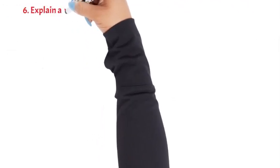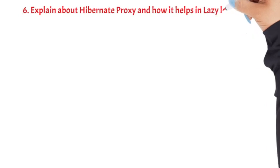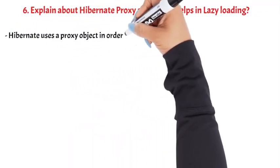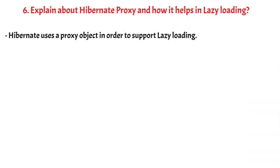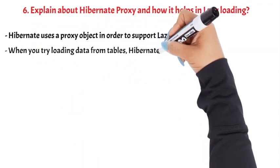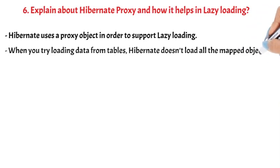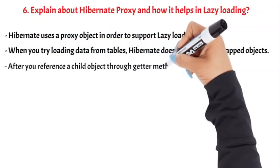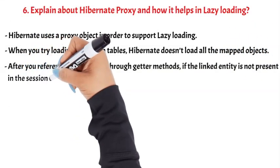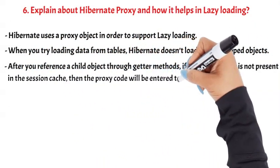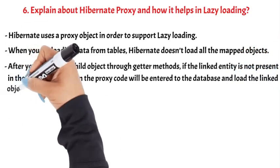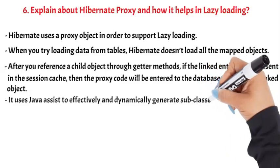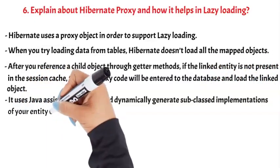Question 6: Explain about Hibernate proxy and how it helps in lazy loading. Hibernate uses a proxy object in order to support lazy loading. When you try loading data from tables, Hibernate doesn't load all the mapped objects. After you reference a child object through getter methods, if the linked entity is not present in the session cache, then the proxy code will go to the database and load the linked object. It uses Javassist to effectively and dynamically generate subclassed implementations of your entity objects.